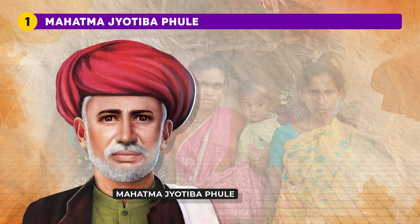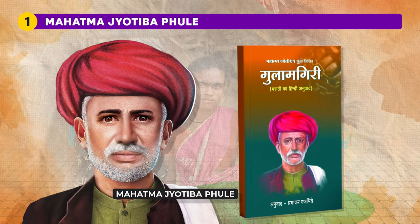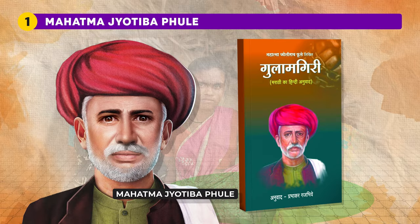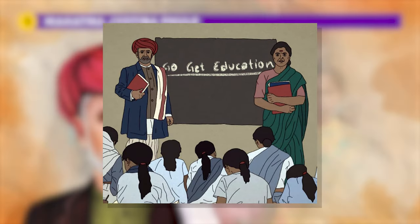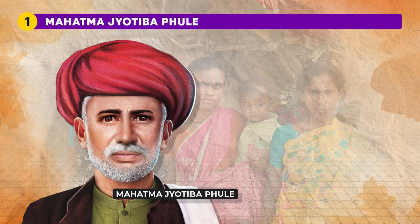First is Mahatma Jyotiba Phule, a 19th century Indian social reformer who played a pivotal role in championing Dalit rights and spearheading the anti-caste movement in India. While not widely recognized as a writer, Phule's influence on Dalit literature is profound. He challenged the oppressive caste system through his writings, notably Gulamgiri, which exposed atrocities against Dalits and passionately advocated for their liberation. He emphasized education as a means to empower marginalized communities, leaving an enduring legacy as a pioneering figure against caste-based oppression.